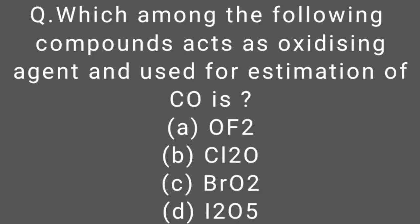Which among the following compounds acts as a strong oxidizing agent and used for estimation of carbon monoxide is I2O5. It easily oxidizes carbon monoxide to carbon dioxide at room temperature. So the correct option of this MCQ is D.